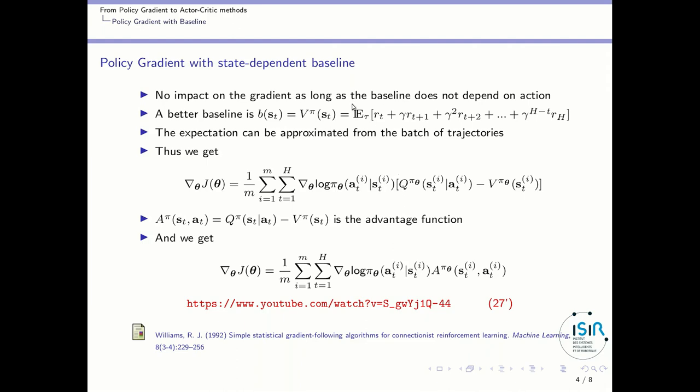It can be shown that you have no impact on the gradient as long as the baseline does not depend on the action. So, for instance, it can depend on the state. So a better baseline would be B of st, which is, for instance, the value function of following the current policy at the current state, which can be obtained as the expectation over those discounted rewards. And this expectation can be approximated from a batch of trajectories, and then you get this formula.